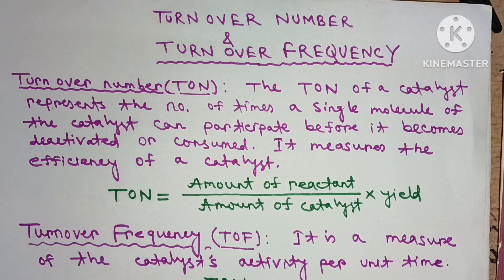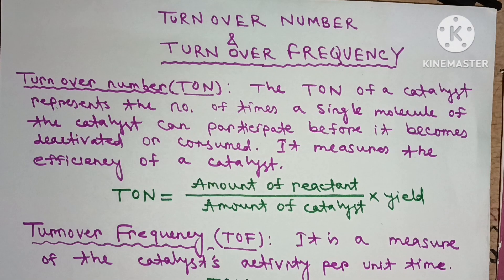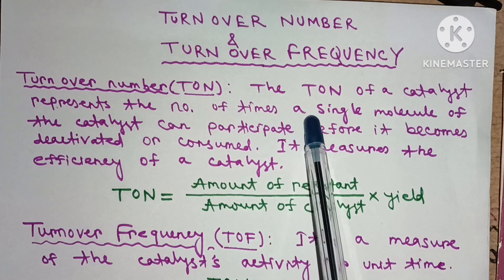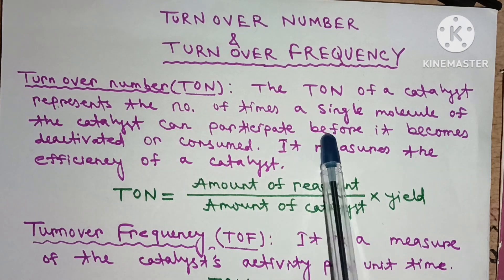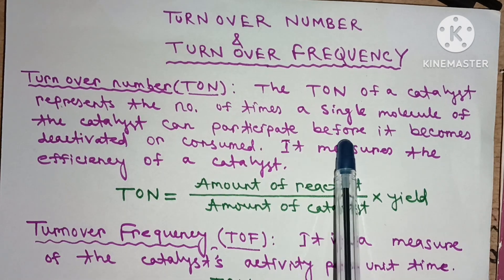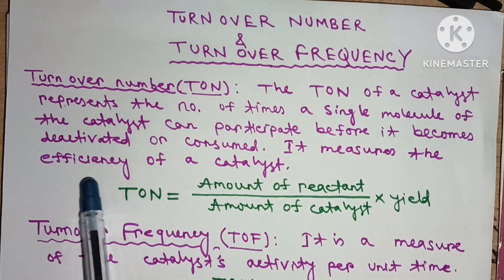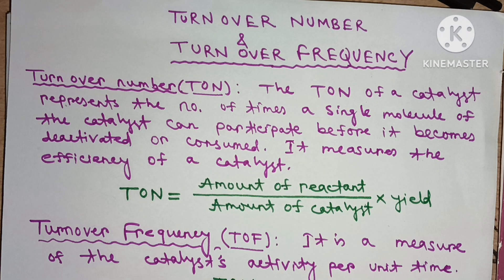Turnover number is all about how many cycles a catalyst can perform before it is deactivated. The turnover number of a catalyst represents the number of times a single molecule of the catalyst can participate before it becomes deactivated or consumed. It measures the efficiency of a catalyst — if a catalyst can perform more cycles, that means it is more efficient.